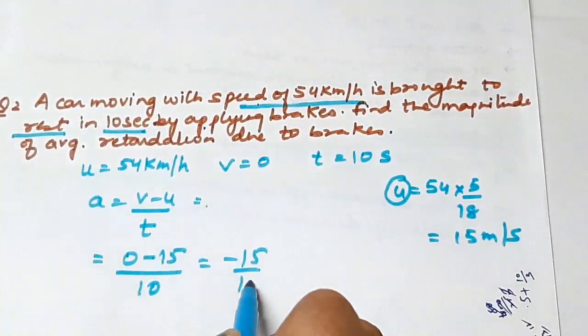The SI unit is meter per second square. Acceleration is also a vector quantity because it has both magnitude and direction. The value of acceleration can be positive, negative, or zero.